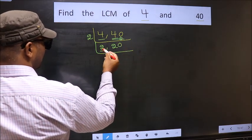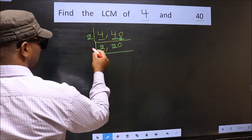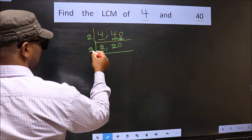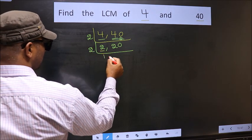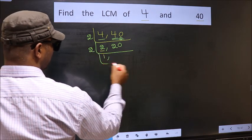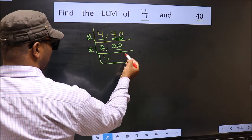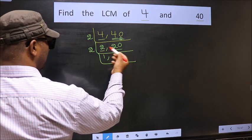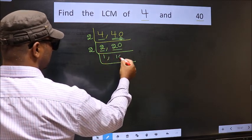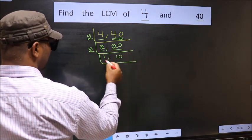Now here we have 2. 2 is a prime number, so 2 times 1 is 2. Now the other number is 20. When do we get 20 in the 2 table? 2 times 10 is 20.